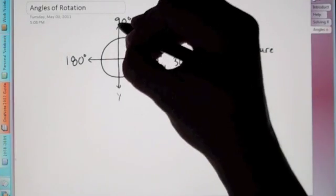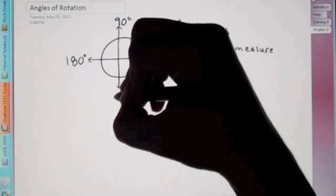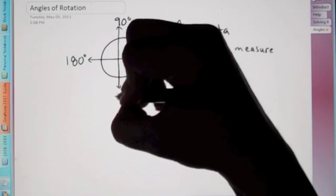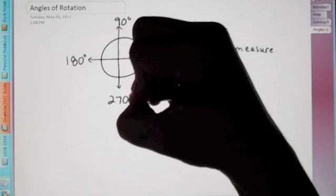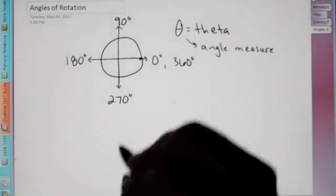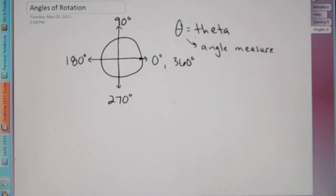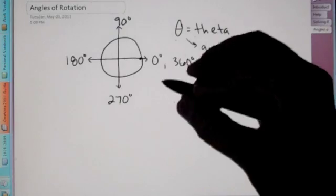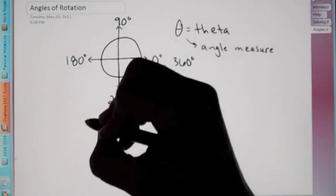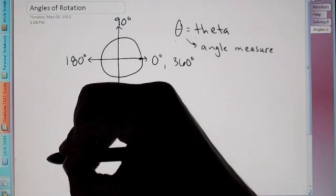So, we have zero, 90, 180. If you add 90 to that, we end up with 270 degrees. And then, again, full circle is 360 degrees. When we rotate this, there's a little terminology you need to know.